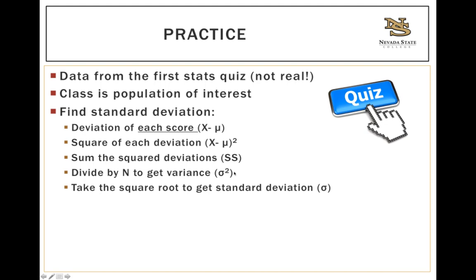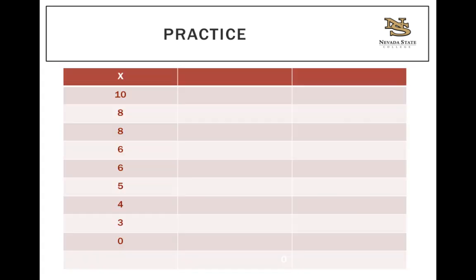Let's take a look at the data from the class on their first stats quiz. Here we see nine students who took the quiz. One person got a perfect 10, one person did not show up and so they got a zero, and then we have all of the other scores here as well.